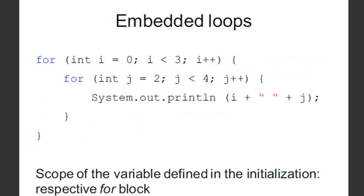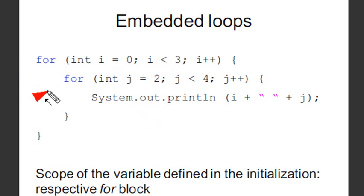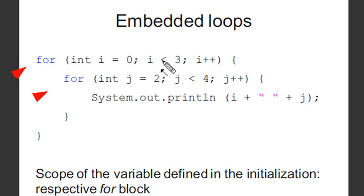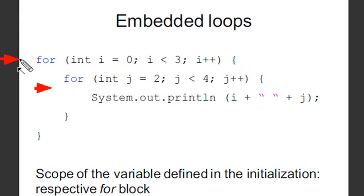Embedded loops — let's take a look at that. This is basically a nested loop. We have two for loops, one inside the other. The way a nested loop works is it will start the outer loop, execute the inner loop first, then return to the outer loop. So you start with i equals 0, go through j equals 0 to 4; then i equals 1, go through j equals 0 to 4; i equals 2, go through j equals 0 to 4. When i equals 3, it stops because 3 is not less than 3. So the pattern is: outer loop, then inner loop executes fully, then outer loop increments again.